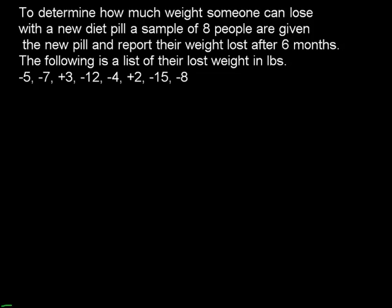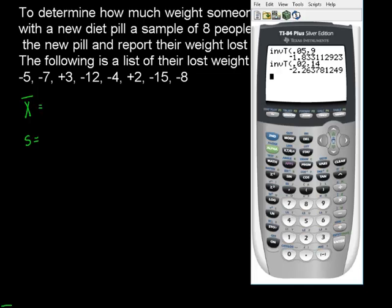All right. Next problem, a little bit different. I want to show you how to solve one that's set up like this. To determine how much weight someone can lose with a new diet pill, a sample of eight people are given the new pill and report their weight loss after six months. The following is a list of their weight loss in pounds. So we got somebody lost five pounds, seven pounds, somebody gained three, somebody lost 12, somebody lost four, somebody gained two again, somebody lost 15, somebody lost eight. So remember, what do I need to get the problem going? I need an average for my sample and I need a standard deviation for my sample. Your calculator can do all of that for you.